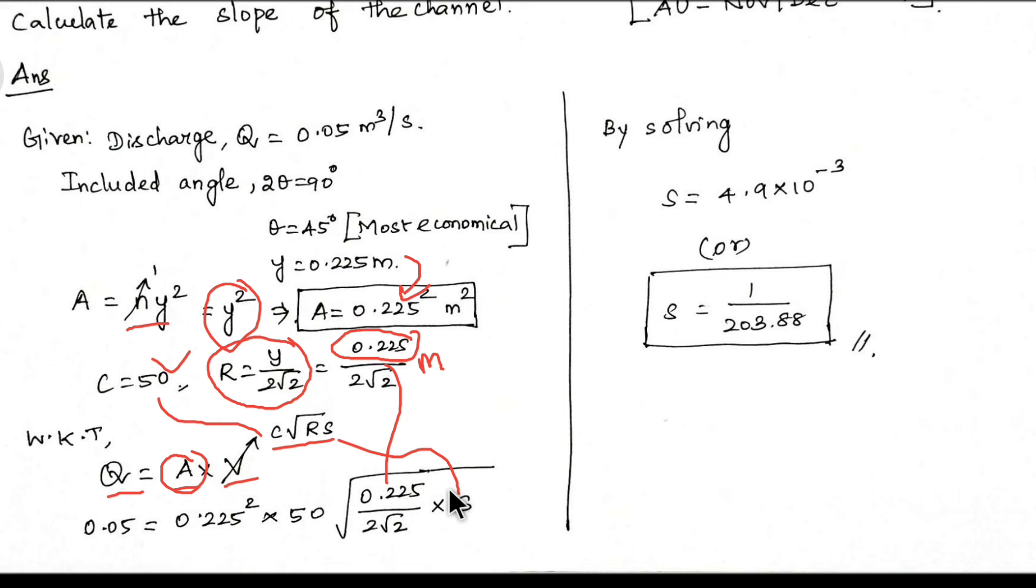Next, we will find out. Q value is 0.05 m³ per second, so we will substitute here. By solving, S value is 4.9 into 10 power 3.